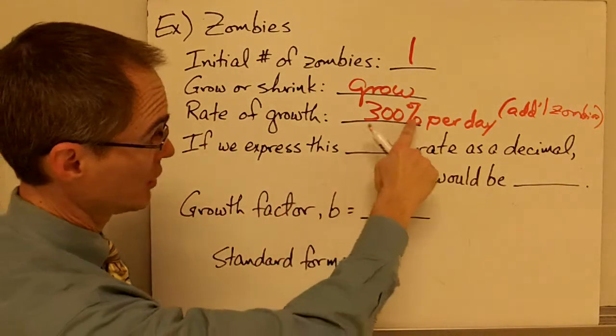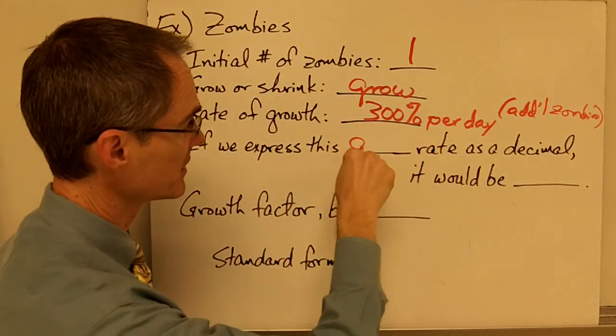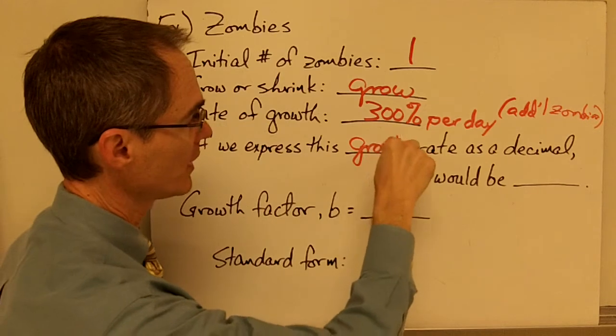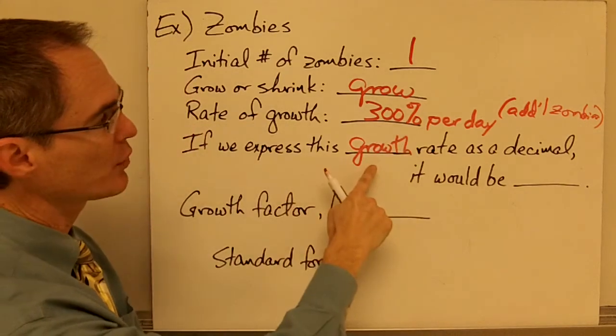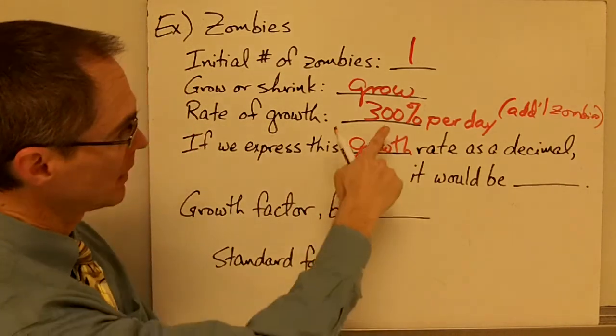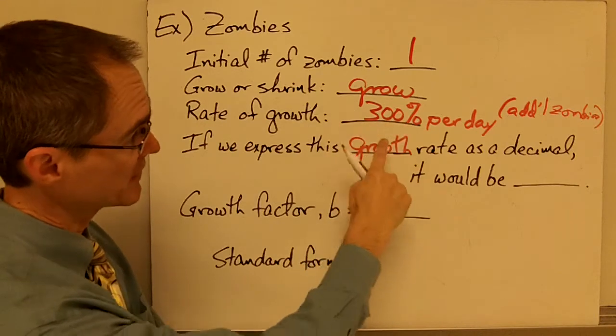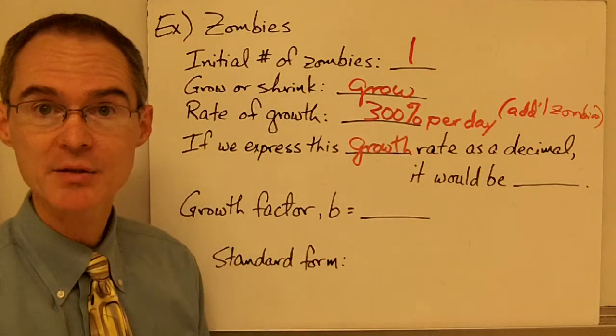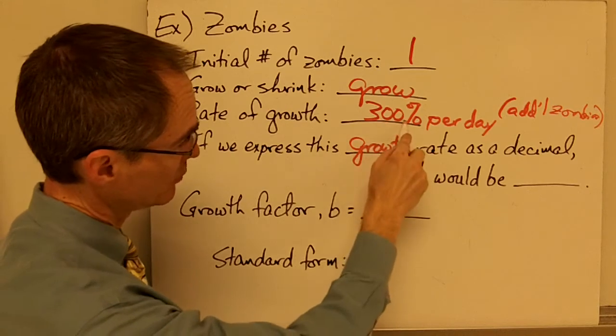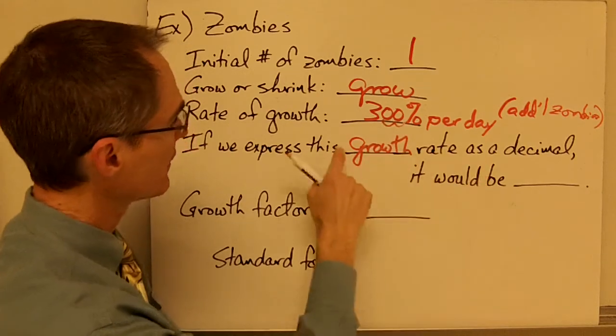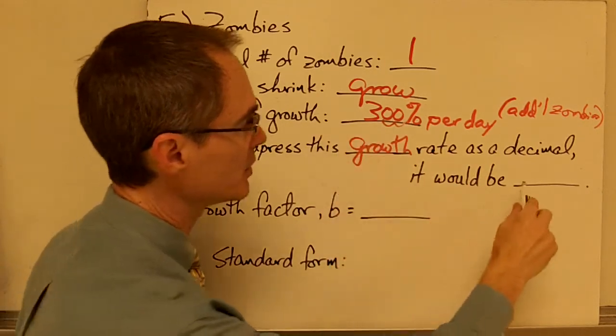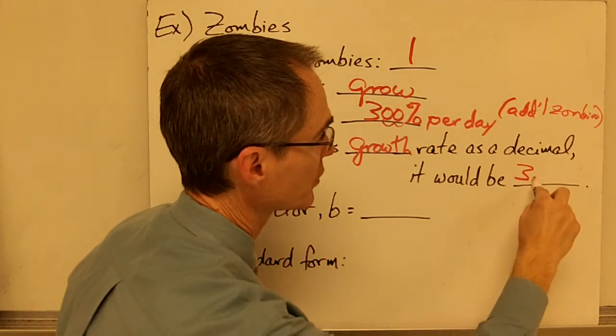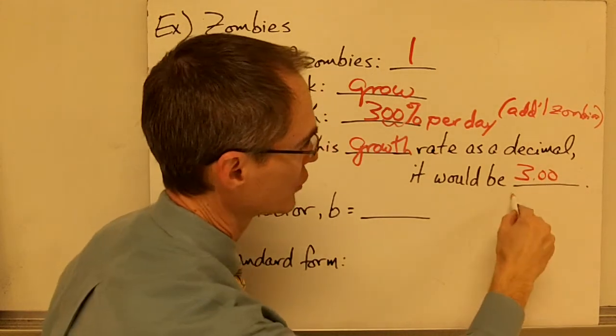All right, well, if we express this rate here, and remember this is a growth rate, if we express this growth rate as a decimal, then if I want to express a percentage as a decimal, I remember I just need to move my decimal place over two places to the left, so I'd move it two places to the left, so if I express 300% as a decimal, I would express it as 3.00, or just 3.